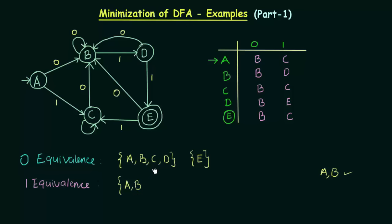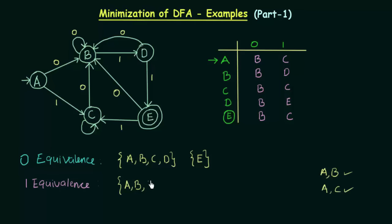Next, I check C against A. A on input 0 goes to B, and C on input 0 also goes to B — same state. On input 1, A goes to C and C also goes to C — same state. So C is also one equivalent to both A and B.